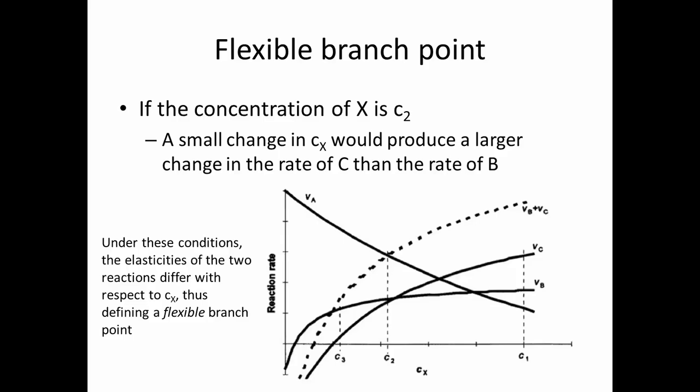A flexible branch point is the opposite. If the concentration of X is at C2 — a lower concentration — a small change in CX would produce a larger change in the rate of C than in the rate of B. Under these conditions, the elasticities of the two reactions differ with respect to CX, giving us a flexible branch point. The same system can be either rigid or flexible depending on the link metabolite concentration, again suggesting the importance of X.